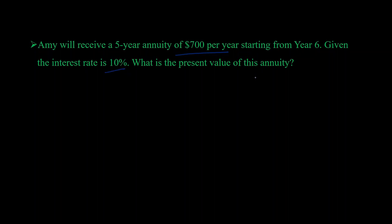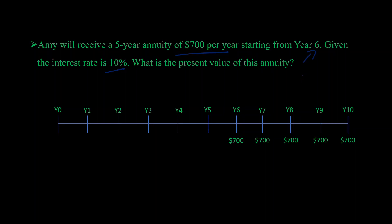The first step is to visualize the timeline. Right off the bat, you can tell this is a delayed annuity because payments start from a future year, year 6, not year 1. We can also see these $700 payments occurring five times, starting from year 6 and ending at year 10.